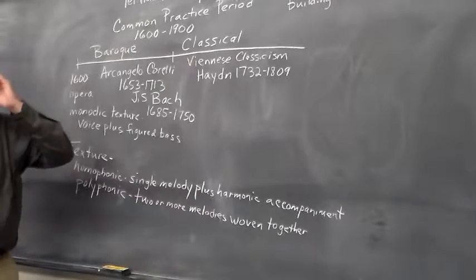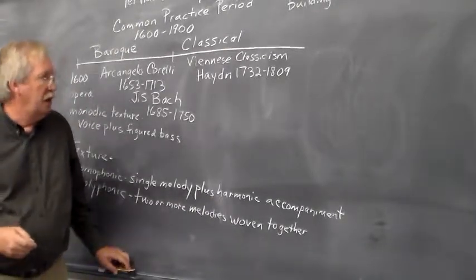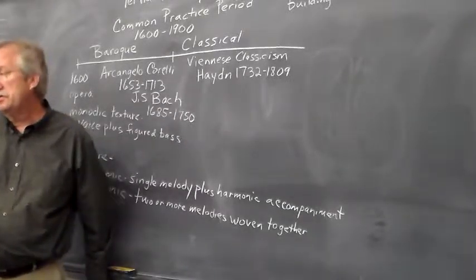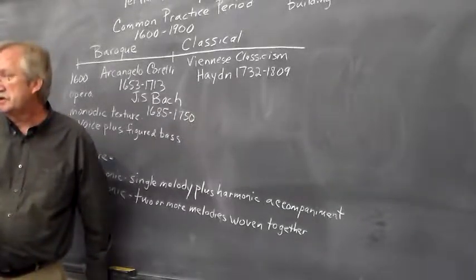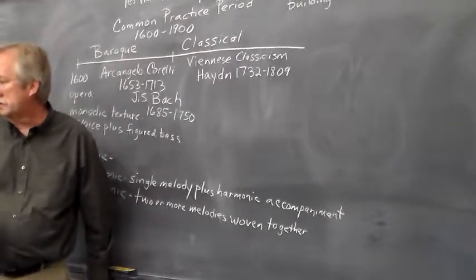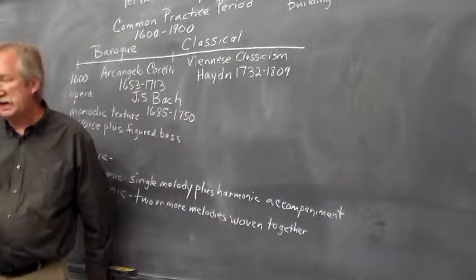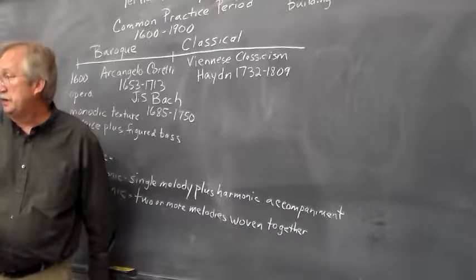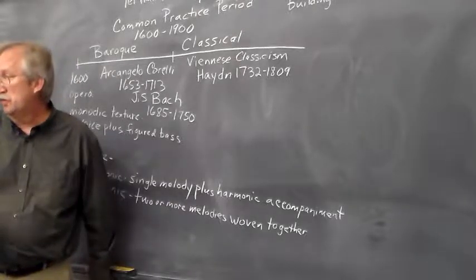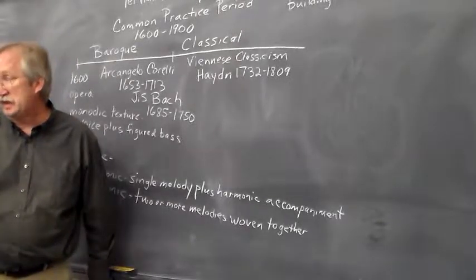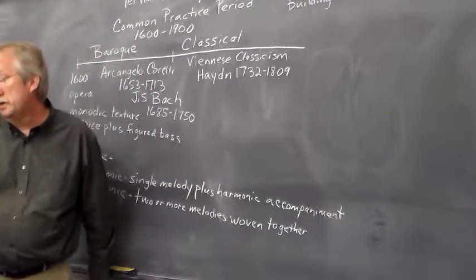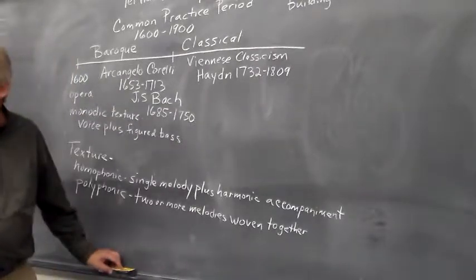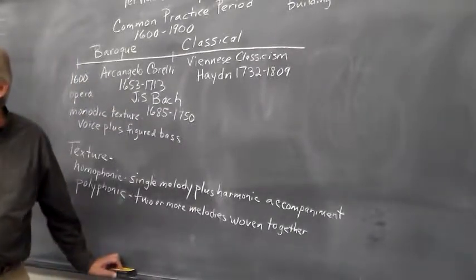Haydn lived from 1732 to 1809. Haydn is sometimes described as the father of the symphony — he wrote over 104 symphonies, and we're still trying to determine exactly how many he wrote, with some works still being discussed for authenticity. He gave lessons to Beethoven, he knew Mozart, and he made the statement that Mozart is the greatest composer that I know. He was really important in the development of the symphony and sonata cycle works.